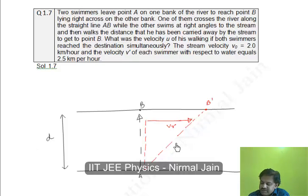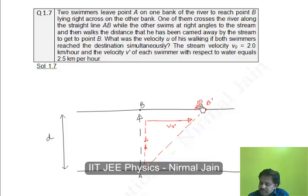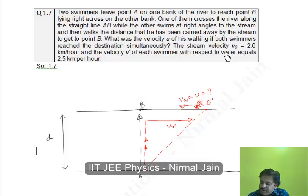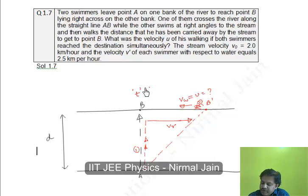So, one crosses along straight line AB, while the other swims at right angle to the stream and then walks the distance he has been carried away by the stream to get back to point B. He walks this extra path with some speed U. We have to find this walking velocity U such that both swimmers reach point B at the same time T.